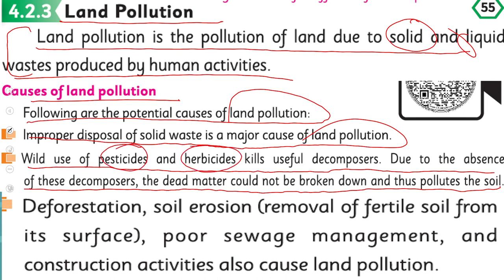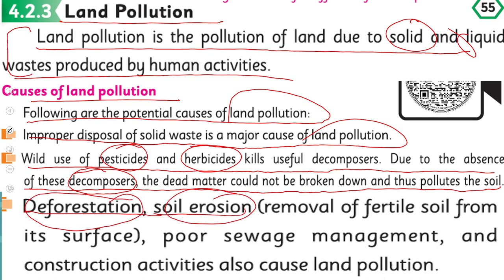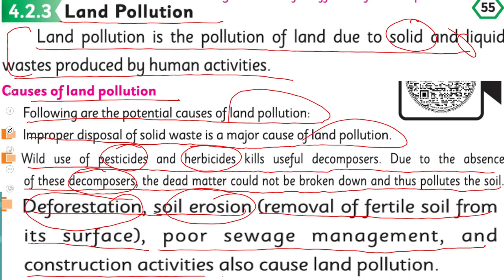Jab pesticides ya herbicides use karte hain to ye fertility ko kam karte hain. Fertility ki kami ki wajah ye hoti hai ke jo helpful decomposers hain soil ke andar — jo dead organic matter ko decompose karte hain — jab decomposers ki kami ho jati hai, toh dead organic matter decompose nahi hota, jis ki wajah se soil pollute ho jati hai.